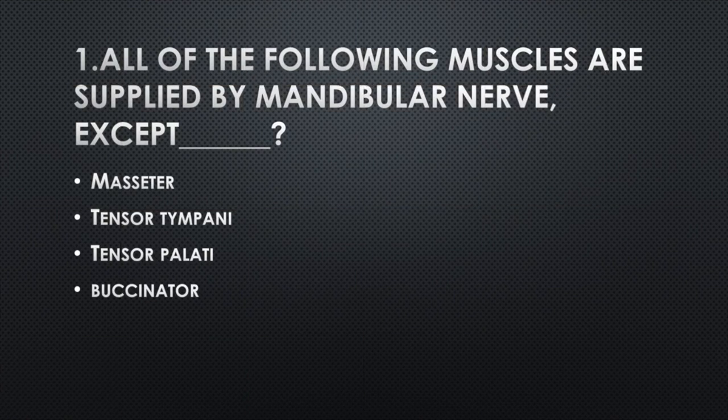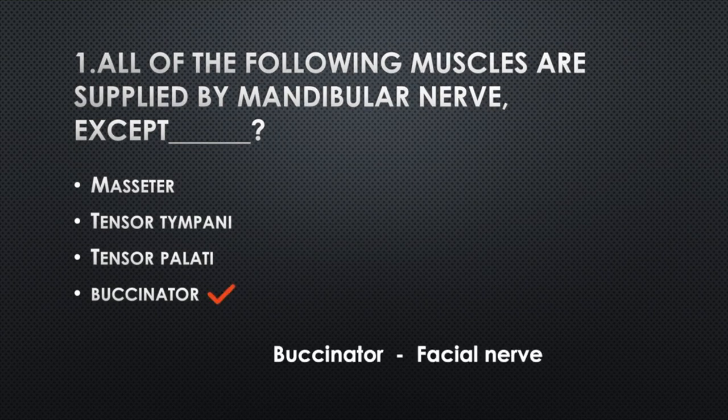All of the following muscles are supplied by the mandibular nerve except — Option A: Masseter, Option B: Tensor tympani, Option C: Tensor palatini, Option D: Buccinator. Answer: Option D, Buccinator. Buccinator muscle is supplied by the facial nerve.